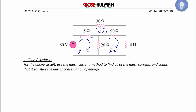For mesh I2, label the currents to obey the passive sign convention with respect to mesh 2. For the 26 ohm, positive is on the bottom, negative on top. The 90 ohm is positive on the left, negative on the right, and the 8 ohm is positive on the top, negative on the bottom. Then do the same for mesh 3: the 5 ohm resistor with respect to I3 is positive on the right, negative on the left; the 30 ohm is positive on the left, negative on the right; and the 90 ohm is positive on the right, negative on the left. This ensures consistency with the passive sign convention so that voltage drops are positive and voltage rises are negative for each mesh.